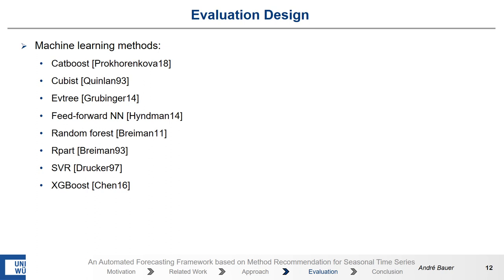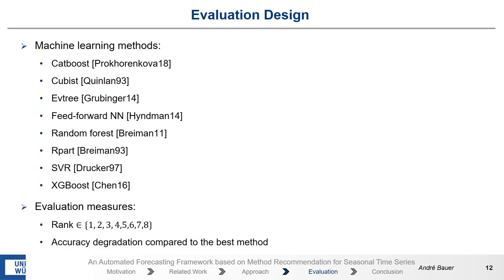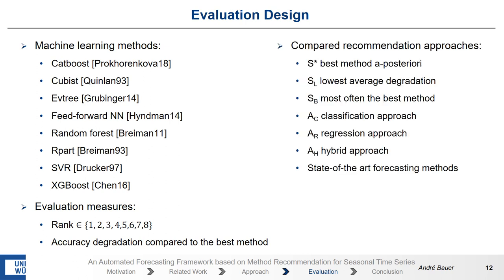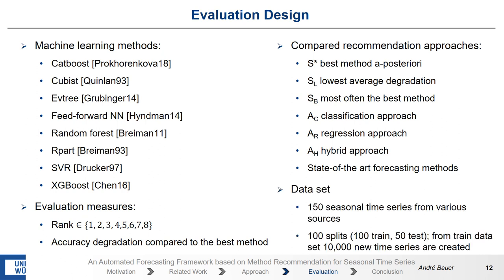As mentioned before, we had a broad evaluation. We consider a lot of machine-learning methods, and we evaluate the rank and the accuracy degradation compared to the best method in the recommendation. We compare different recommendation approaches: S-star has knowledge about the future — it is the best recommendation system and is a theoretical construct; S-L chooses the method that has the lowest average degradation in the training set; S-B chooses the method that was the best in training; and A-C, A-R, and A-H are our approaches. We compare these with state-of-the-art forecasting methods. Our dataset contains 150 seasonal time-series from various sources, and we perform 100 splits with 100 train and 50 test time-series. From the training dataset we create 10,000 new time-series for each training session.